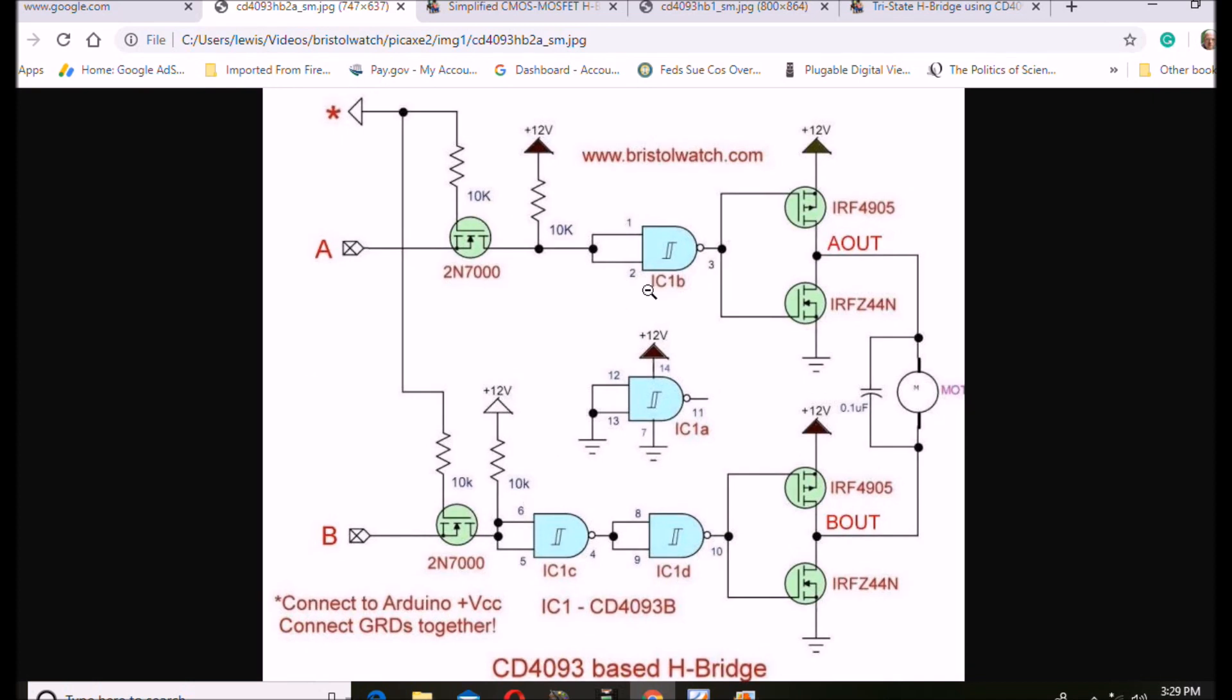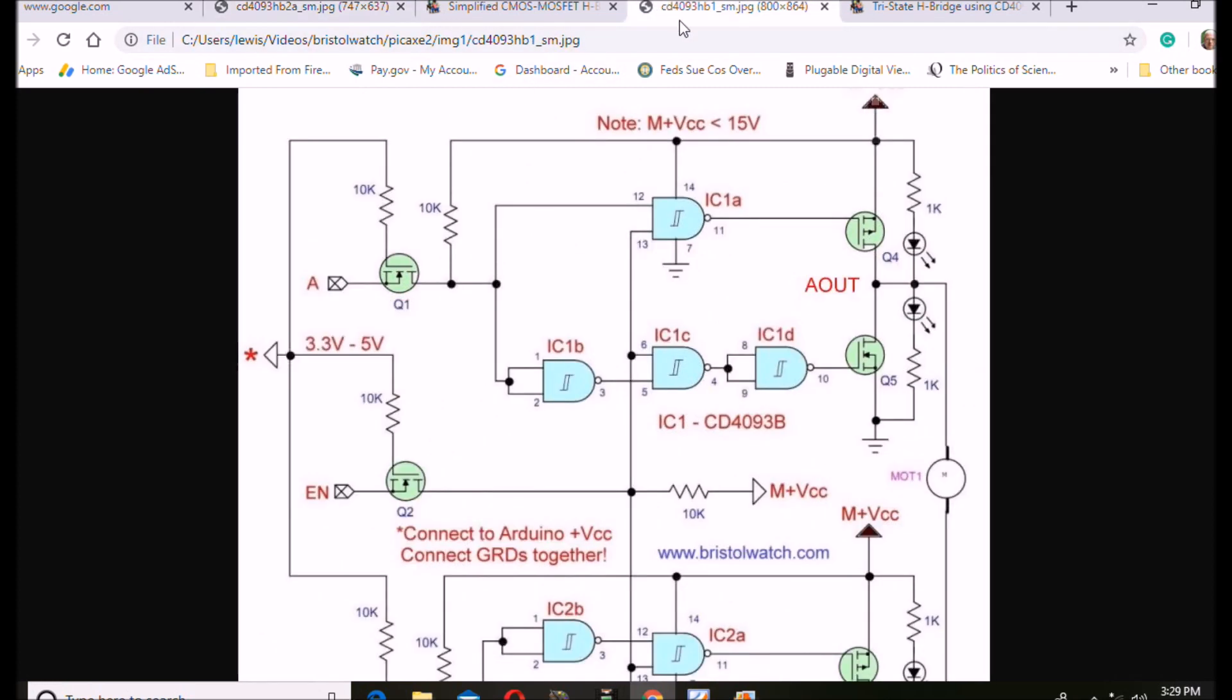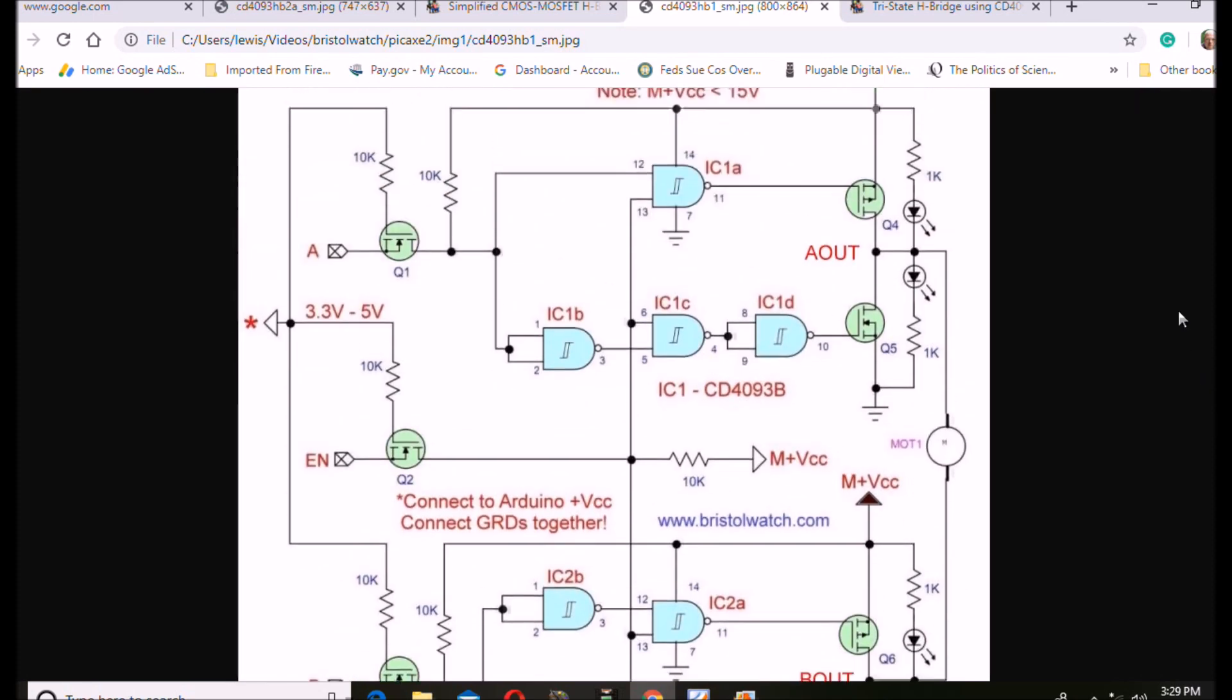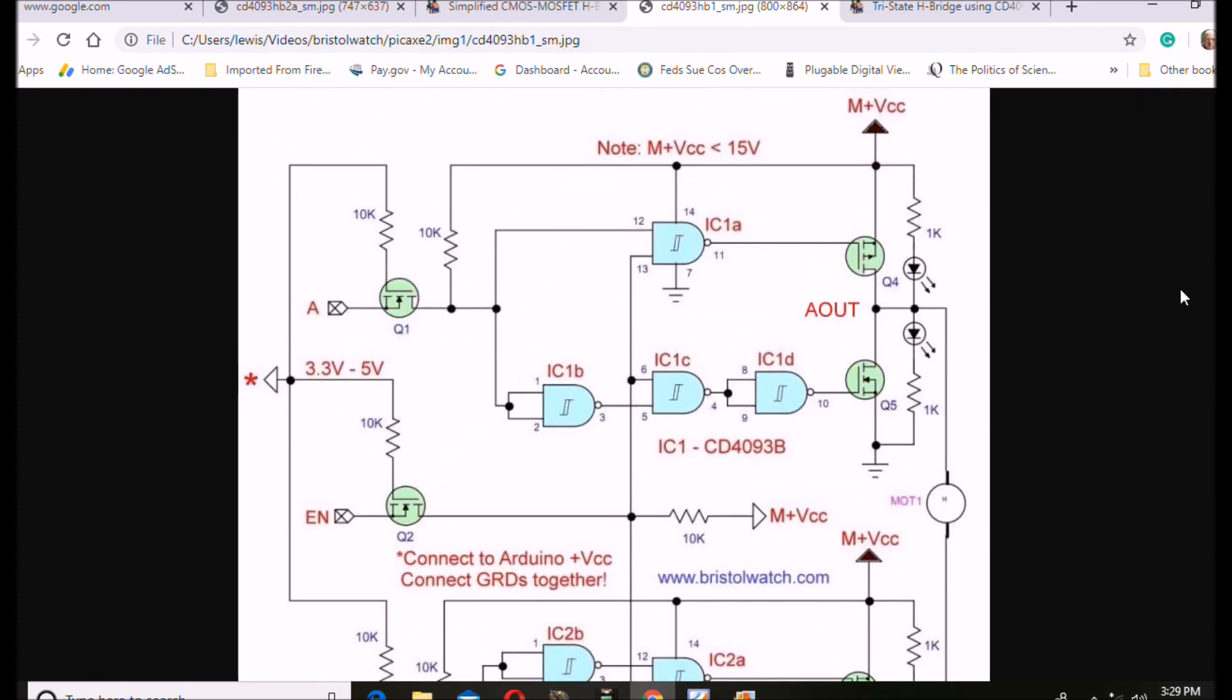And we used an extra CD4093. We're using two of them, and we're using all four inputs. As opposed to this one, where we just used three of the available four for the entire H-bridge. I'm using two complete CD4093s for a full H-bridge with an enable and a high Z output.